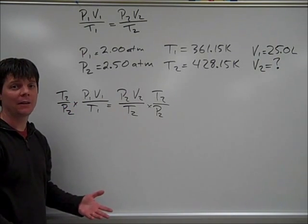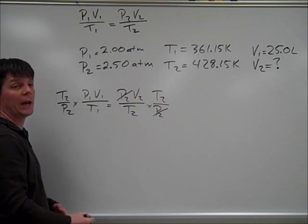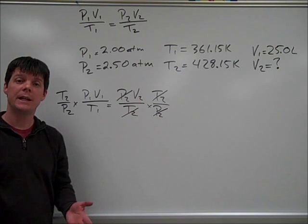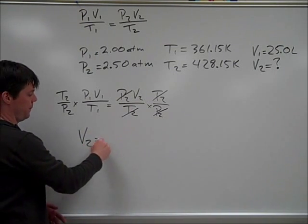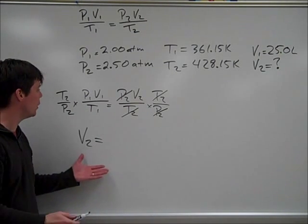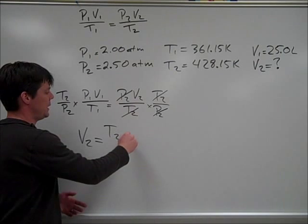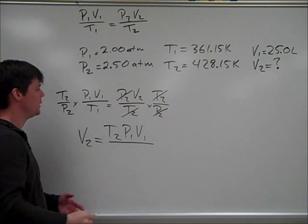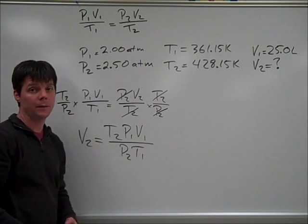Okay, let's go ahead and cancel those variables out from the side that we were working with here. P2 cancels with P2. Now I can rewrite my equation in terms of V2. I've found that this is going to be T2 times P1 times V1, divided by P2 times T1.